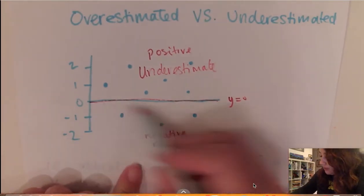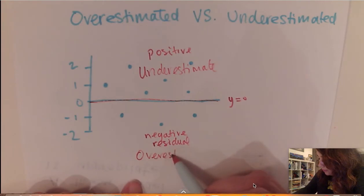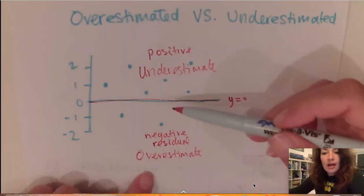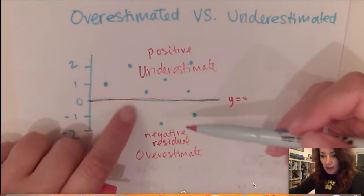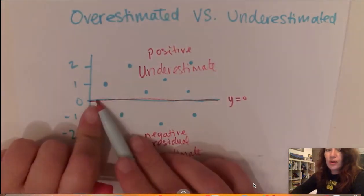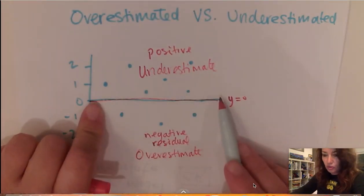So everything under the line is an overestimate which may seem confusing but everything that is above the line is an underestimate. So you got to think of where the line is to determine that.